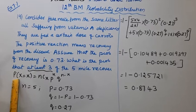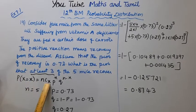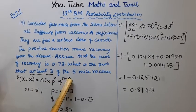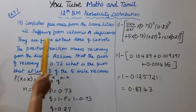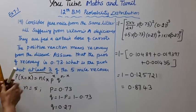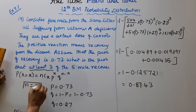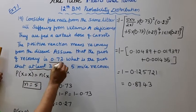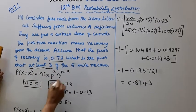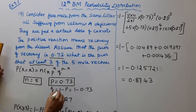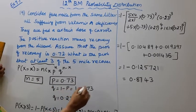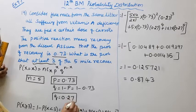By binomial distribution formula, P(X) = nCx × p^x × q^(n-x). N is equal to 5 mice. P, the probability of recovery, is 0.73. So Q = 1 - P = 1 - 0.73 = 0.27.